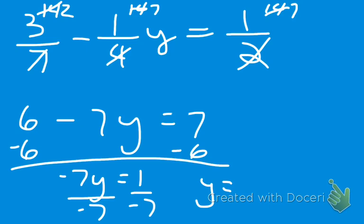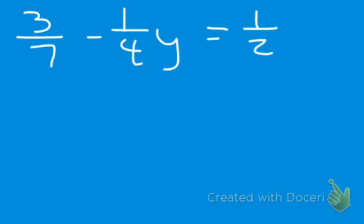Oh, did I do something wrong? It's not 14, because 4 doesn't go into 14. Oh, right. Because 4 times 4 is 16, not... Yeah, so we're going to start over. All right. 3 over 7, 7 minus 1 fourth y equals 1 half. Okay, they all go into 28. Yes.